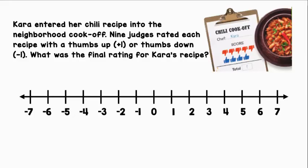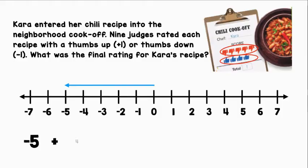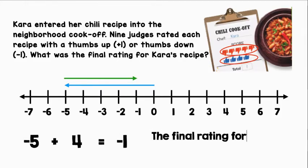Let's use a horizontal number line to represent this situation. To the right, we can see that she has five thumbs down. We can represent this with a negative five. We also see she has four thumbs up, so we can add a positive four. That will give us her final rating. Let's move four spaces to the right from negative five. We're moving to the right because four is positive. We're left at negative one. The final rating for Kara's recipe was negative one.